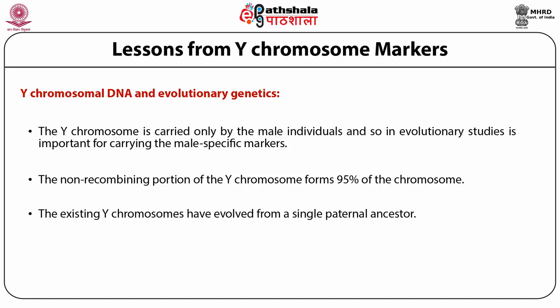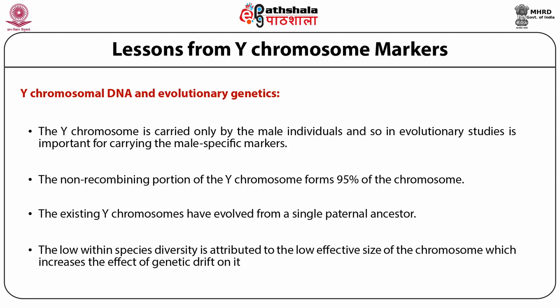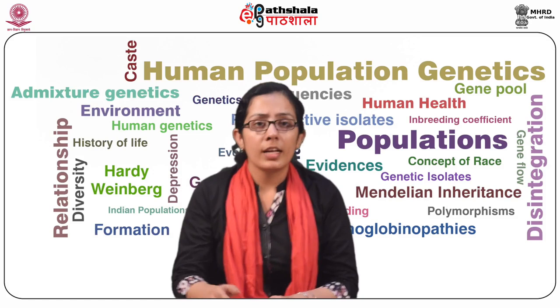All existing Y chromosomes have evolved from a single paternal ancestor. The Y chromosome has unusual features compared to other evolutionary markers: a high mutation rate, higher sequence divergence between species, and lower sequence diversity within species. The low within-species diversity is attributed to the low effective size of the chromosome, which increases the effect of genetic drift. The high genetic drift also accounts for high between-population diversity in humans, making it an important marker for studying geographical variations.